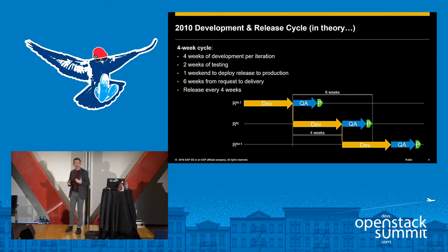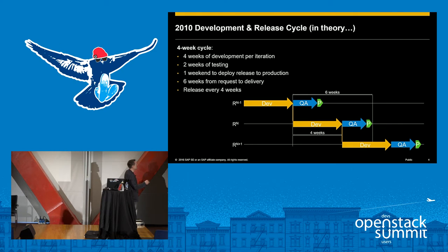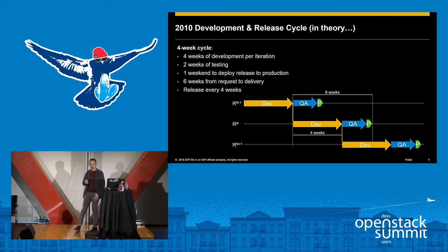We did have a nice release cycle design: a four-week cycle length where we'd do some development, then at the end of that cycle release to the QA team for testing, and then release to the operations team for deployment to production. Meanwhile, while that testing and deployment is going on, developers carry on for the next four weeks — getting a good monthly deployment of four weeks of solid work. Well, that was the idea.